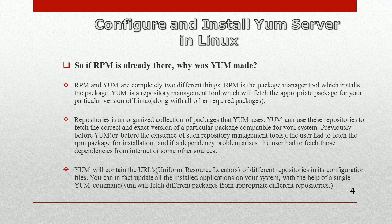RPM and YUM are completely two different things. RPM is a package manager tool which installs packages, while YUM is a repository management tool which will fetch the appropriate package for your particular version of Linux. With YUM, you can create a repository that holds thousands of packages, and YUM can resolve dependencies on its own — that is the key benefit of YUM.